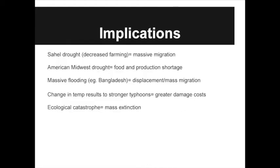Drought simply means that farming in that area decreases and large numbers of people migrate to other areas. The American Midwest drought happens when there is an insufficient water supply to irrigate crops sufficiently, thus leading to food shortage.